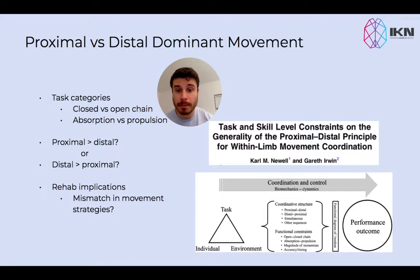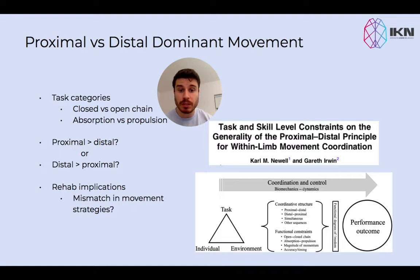I wanted to focus on two key task categories here: open versus closed-chain movements, and absorption versus propulsive bias movements. What you'll find when researching proximal to distal movement sequencing is that a lot of the movement tasks used in many studies are very much open-chain in nature and propulsive biased in nature — using movements like throwing or kicking.